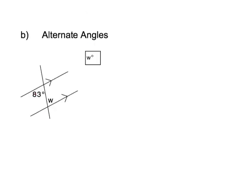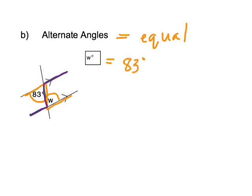Alternate angles form a Z pattern. Alternate angles are equal — they're the same, and they're on the inside of the Z. So W would equal 83 degrees. Drawing a backwards Z, the angle inside is equal to the alternate angle.